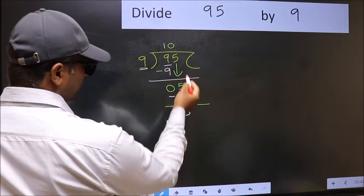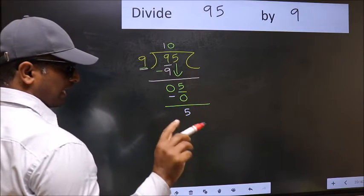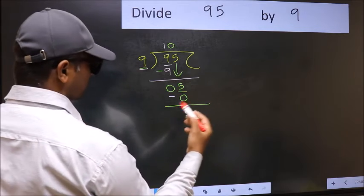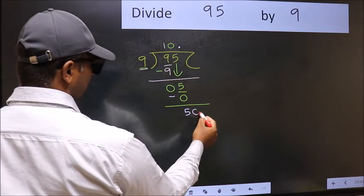Over here, we did not bring any number down, and 5 is smaller than 9. So, now you can put the dot and take 0.